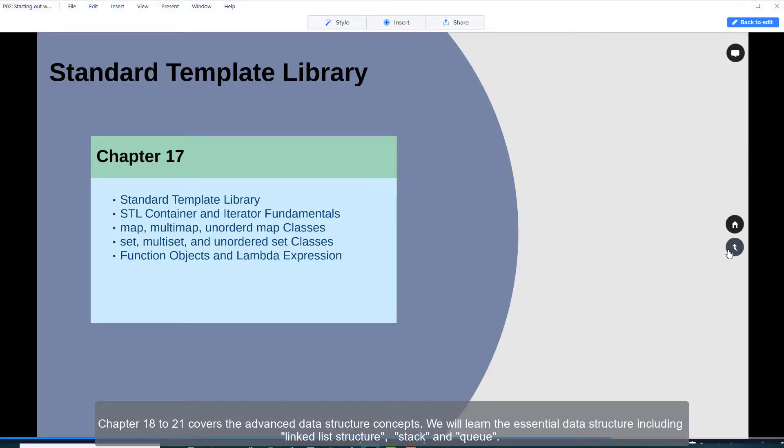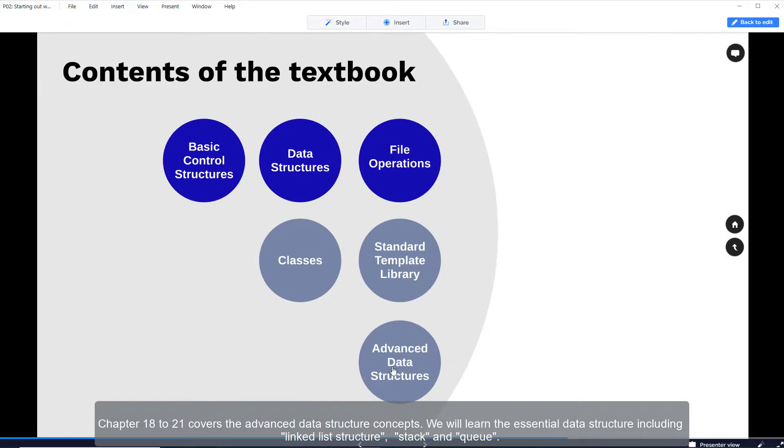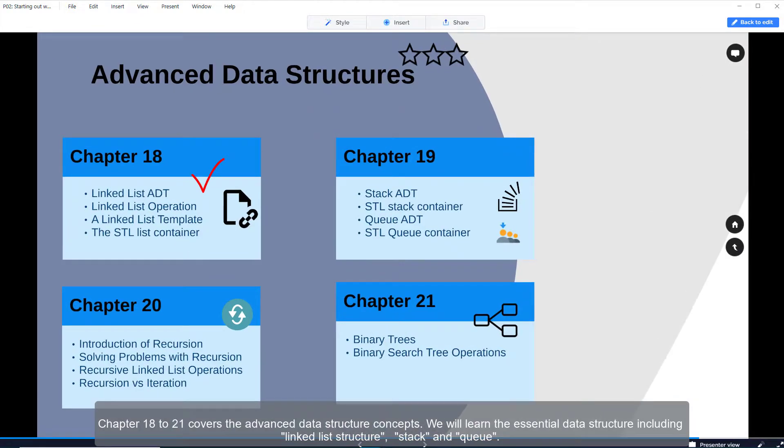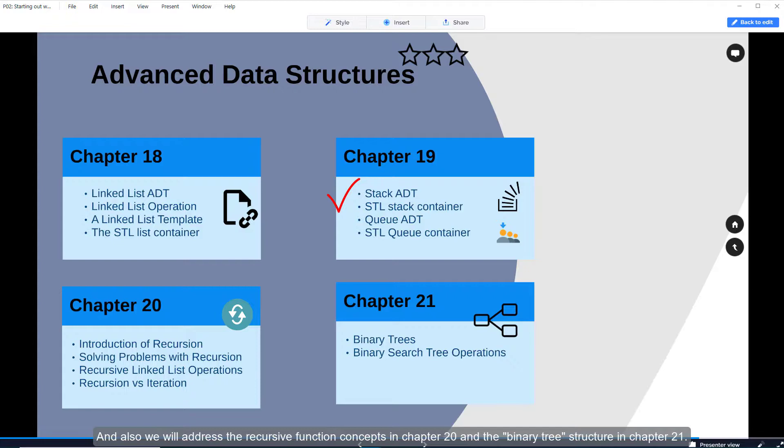Chapters 18 to 21 cover the advanced data structure concepts. We will learn the essential data structures including the linked list structure, stack, and queue. And also we will address the recursive function concept in chapter 20 and the binary tree structure in chapter 21.